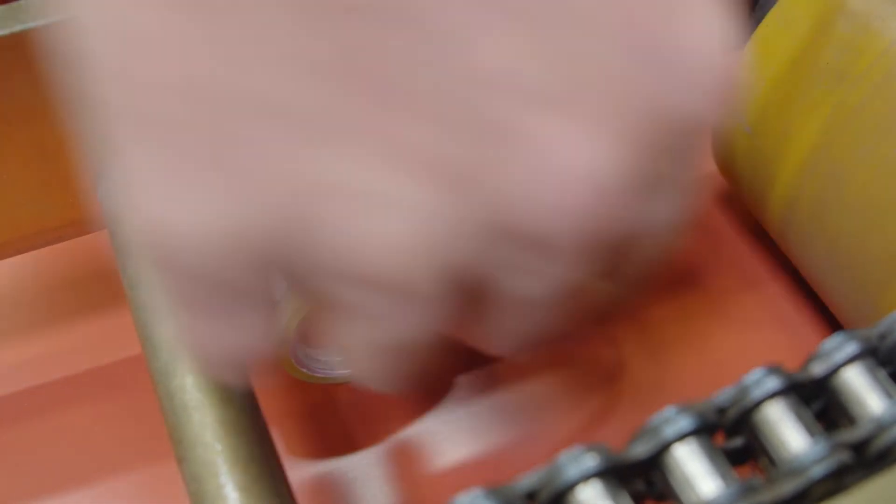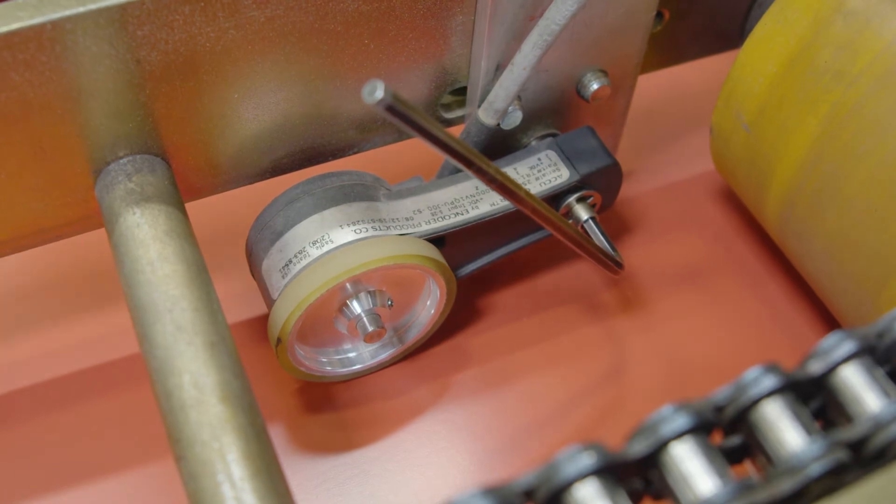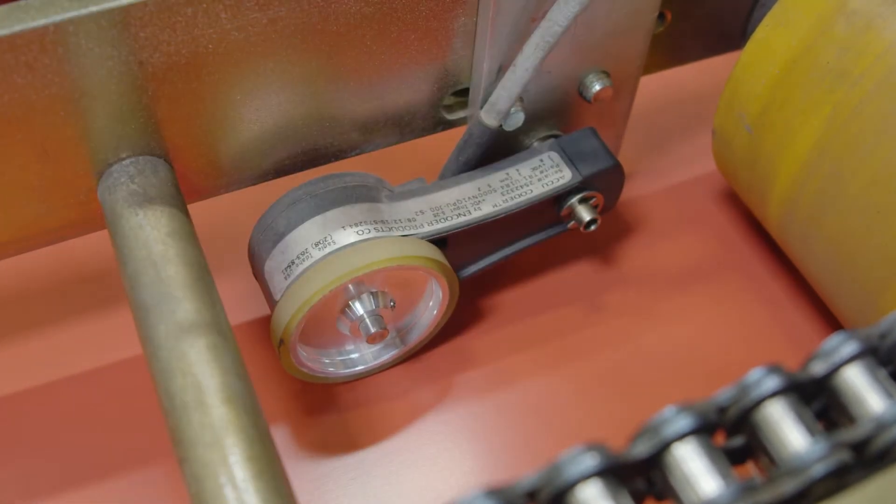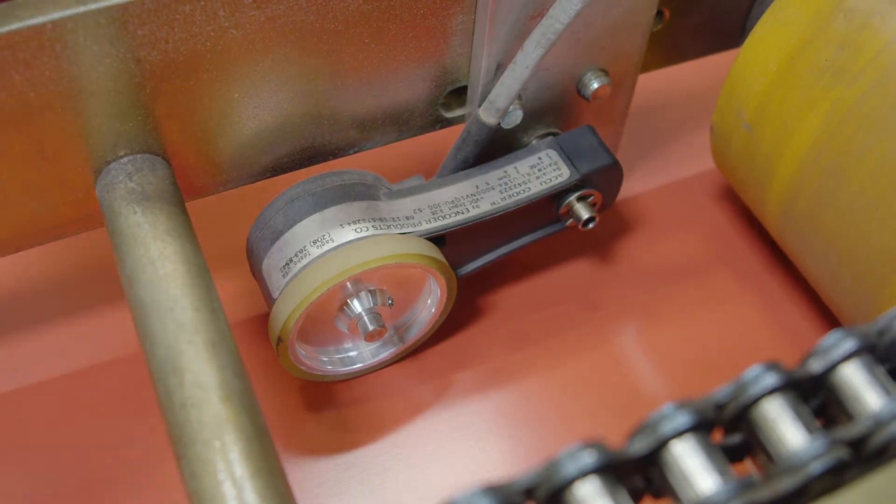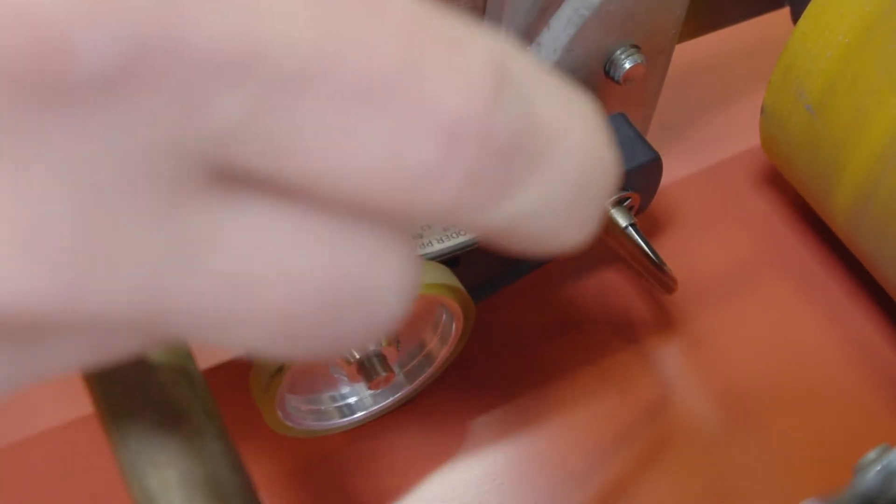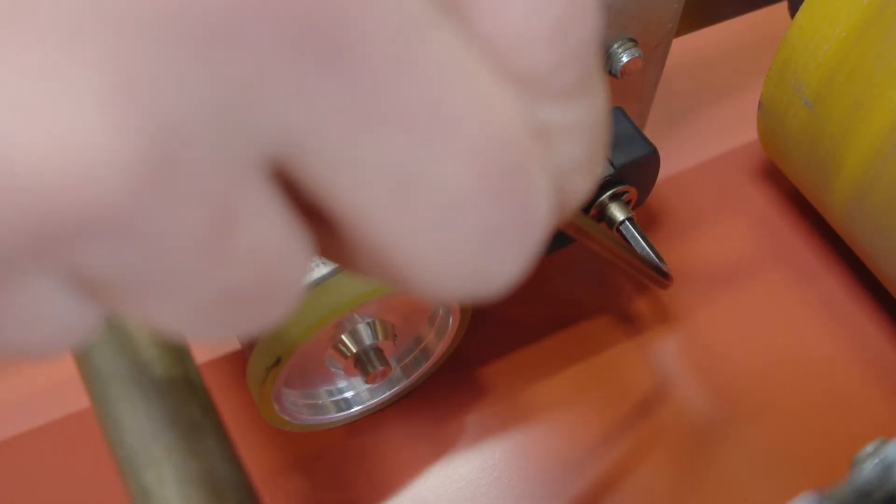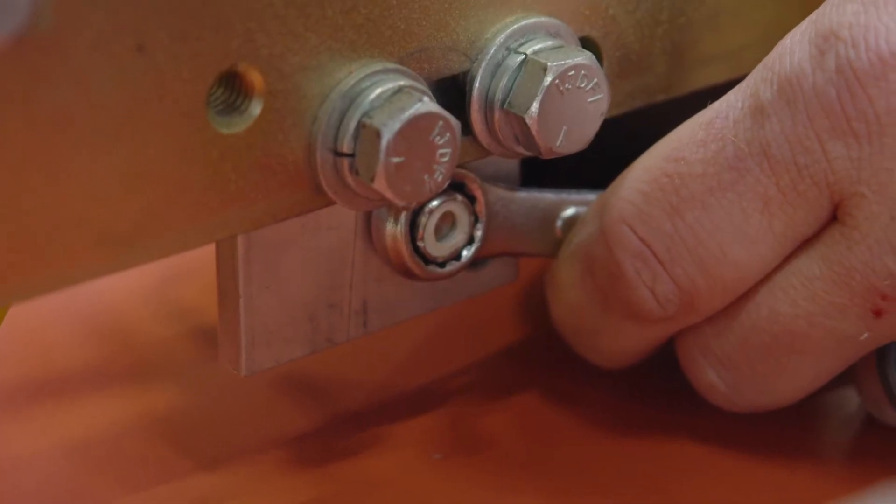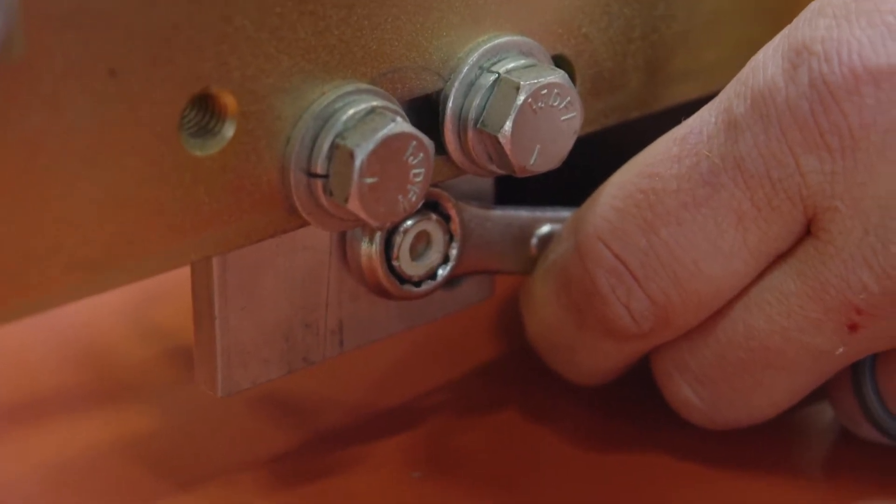So we do not want to over-tighten this fastener. We just want to make sure that we're snug. We've got our hex wrench inserted. We want to come back on this other side here and just make sure that our nut is snug.